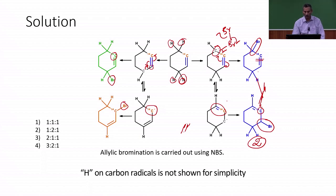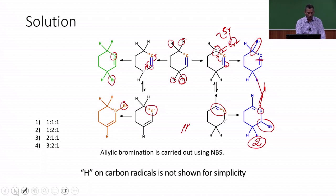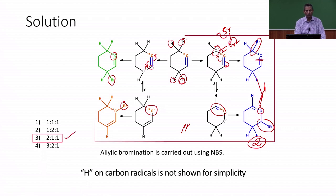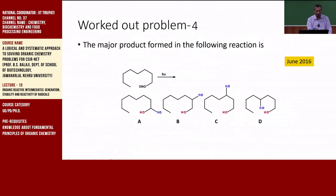Looking at the distribution: we have two products with the bromine atom adjacent to the labeled carbon, and two other products in a 1:1 ratio where bromine is either on or away from the labeled carbon. The ratio of the products A:B:C is therefore 2:1:1.